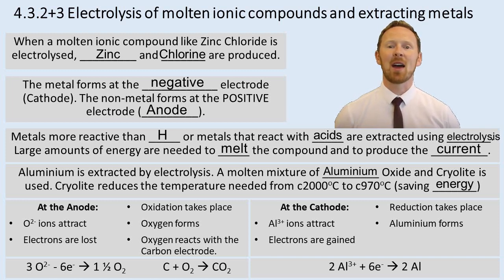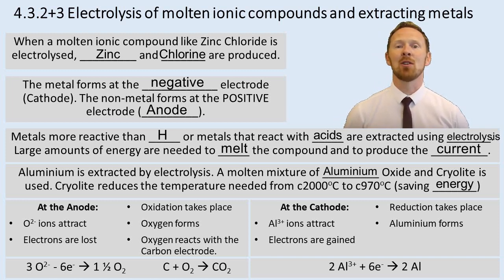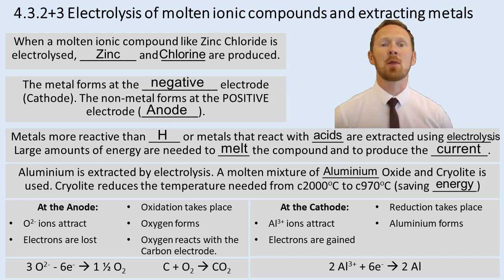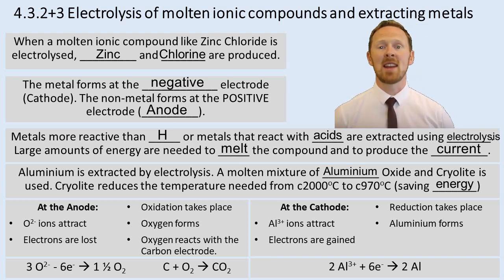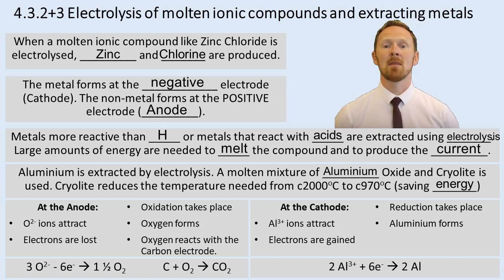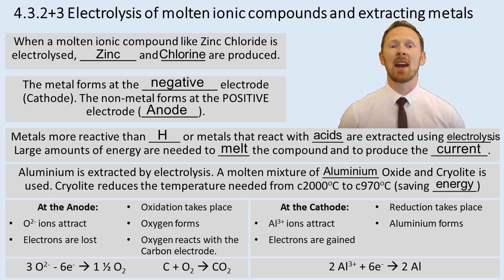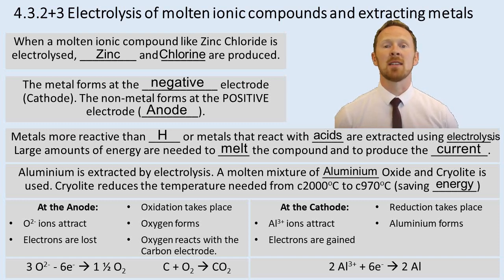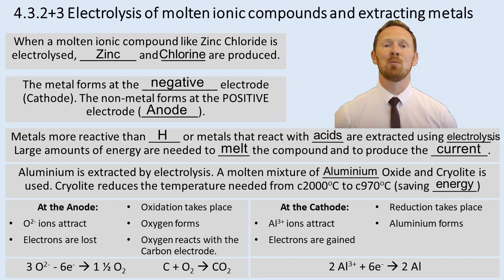At the cathode, aluminium ions (Al3+) are attracted because positive ions are drawn to the negative cathode. Electrons are gained — reduction takes place. Because we're not in solution, there are no hydrogen ions present, so aluminium forms at the cathode.